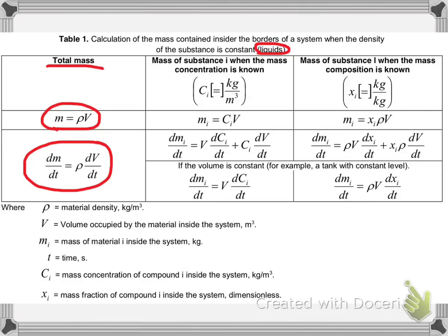If we want to know the mass of a certain substance when we know the concentration inside our system, then the mass of i will be the concentration of i times the volume. In a system with a constant volume, then the derivative of the mass of i with time will be the volume of our system times the derivative of the concentration of i with time.